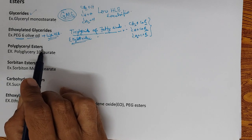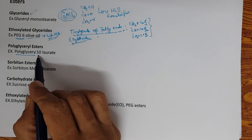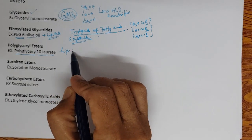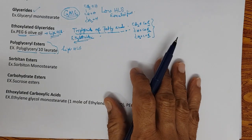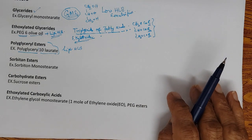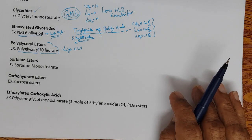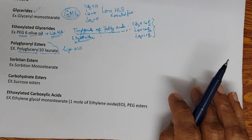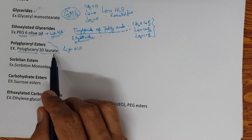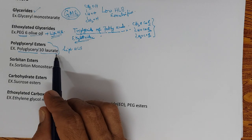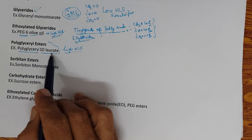Polyglyceryl esters are another group — for example polyglyceryl-10 laurate, which is high HLB and widely used. People are moving away from ethoxylated emulsifiers because ethylene oxide is petroleum-based. Polyglyceryl-10 laurate is not ethoxylated and is widely used in green cosmetics.